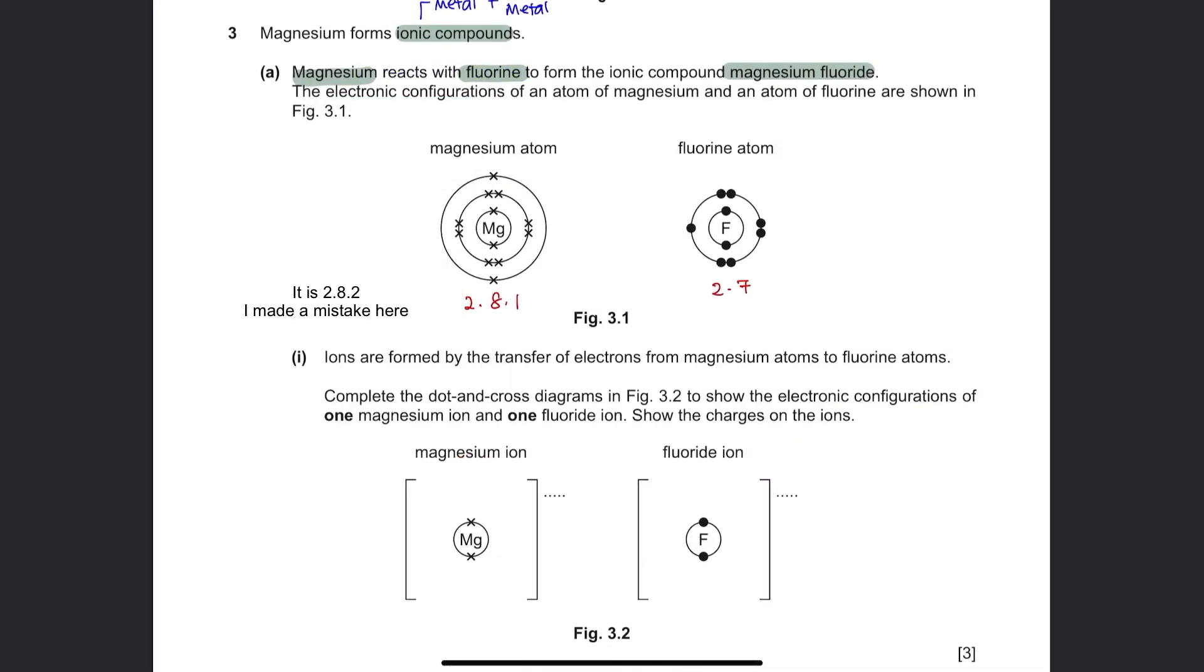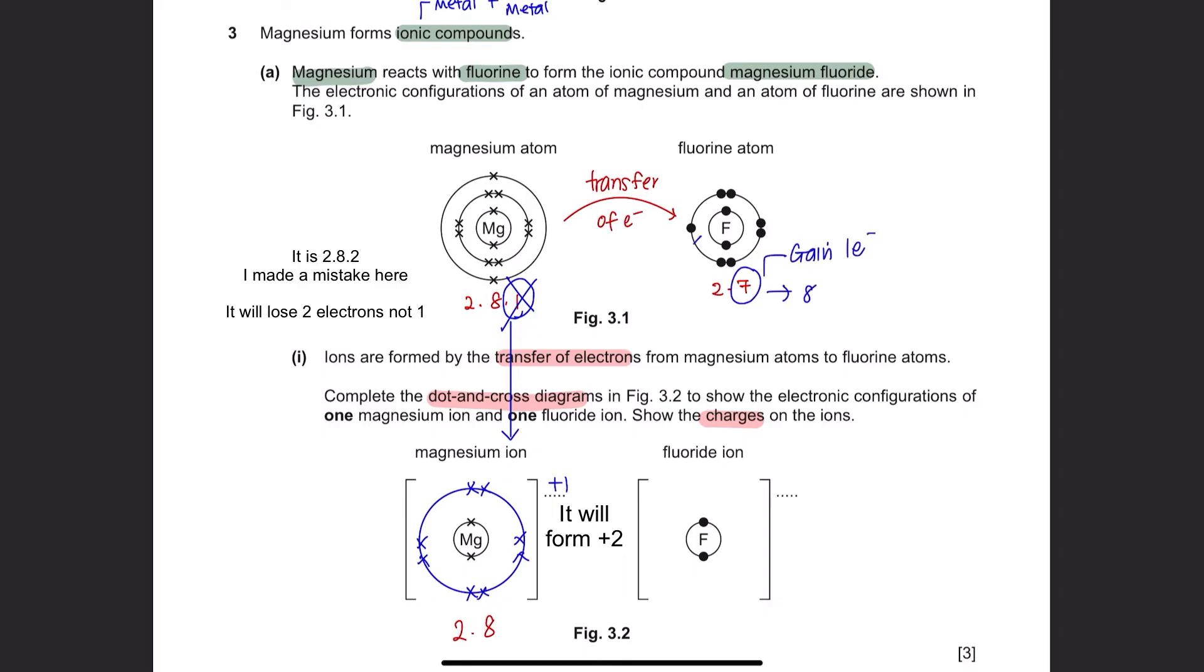Part 1. Ions are formed by the transfer of electrons from magnesium atoms to fluorine atoms. Complete the dot and cross diagram in figure 3.2 to show the electronic configurations of one magnesium ion and one fluoride ion. Show the charges on the ions. To obtain a stable full outer shell of electrons, the magnesium atom would lose two electrons to form magnesium ion. Therefore, it will form a charge of positive 2. Whereas, the fluorine atom would accept one electron from magnesium forming a fluoride ion with charge negative 1.